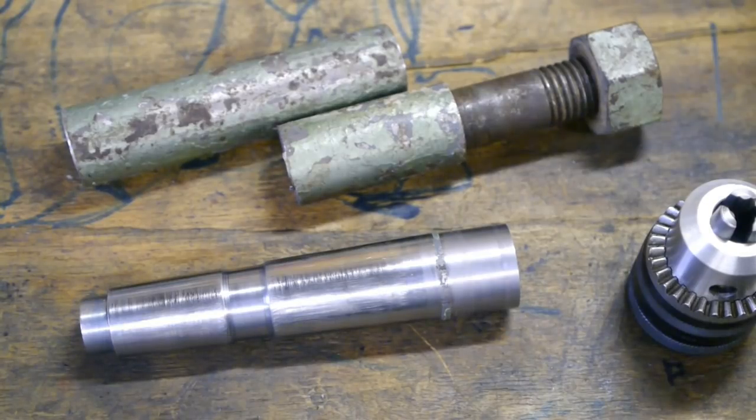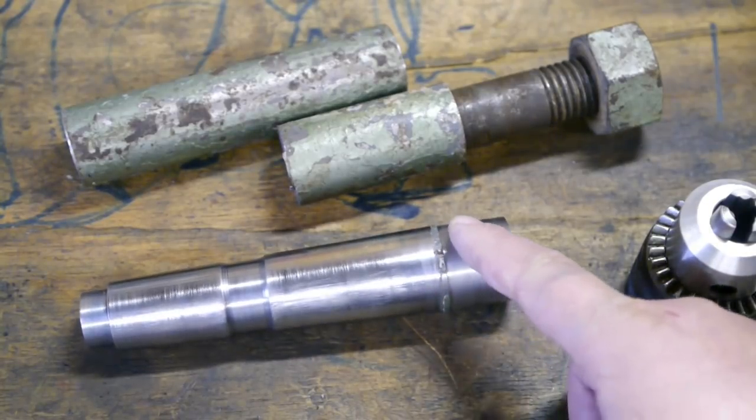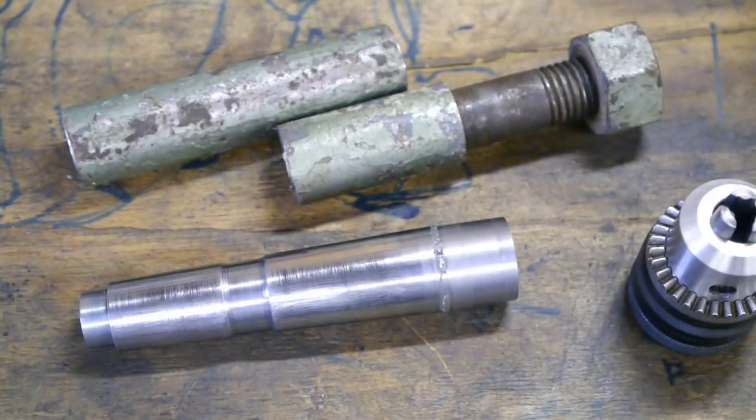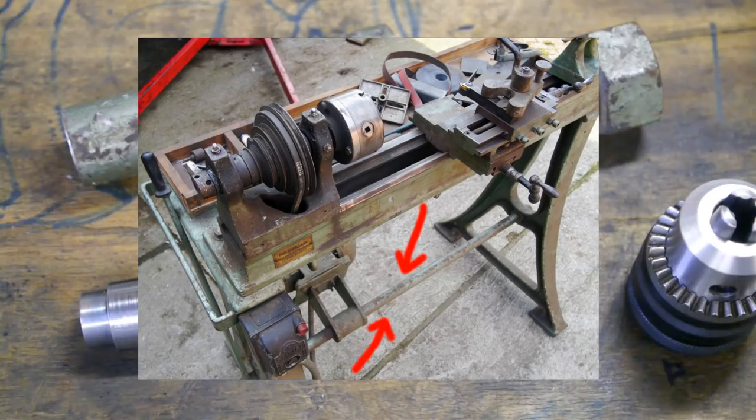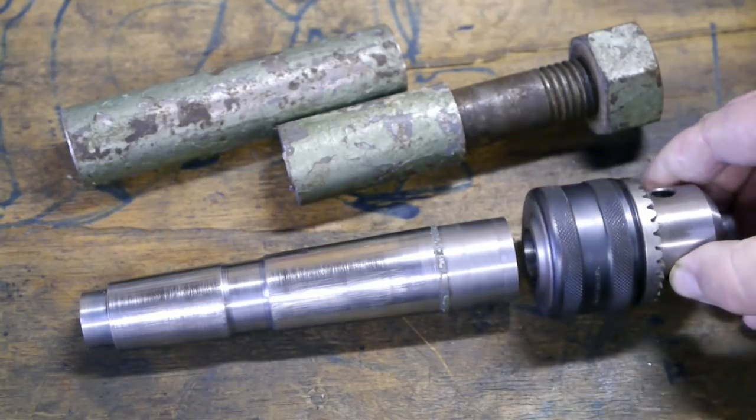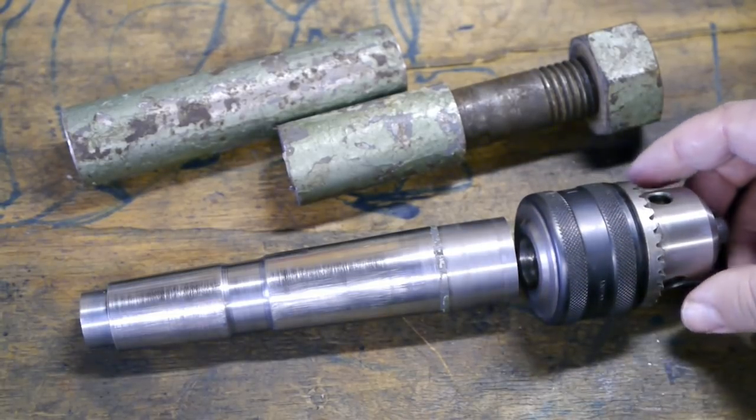In my previous upload I turned this Morse taper 4 out of scrap metal that used to be part of an old bench lathe, and now it's time to make it into something useful that fits this flea market drill chuck made by Rohm.